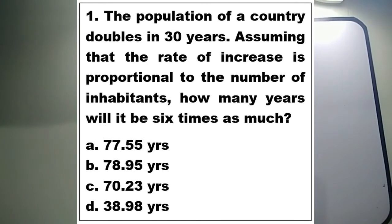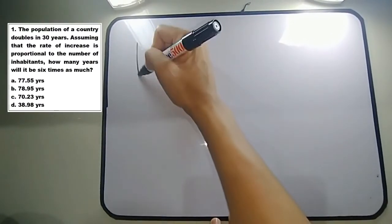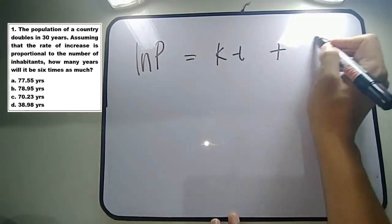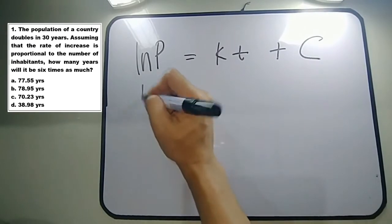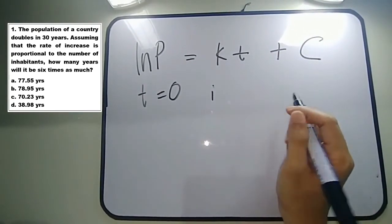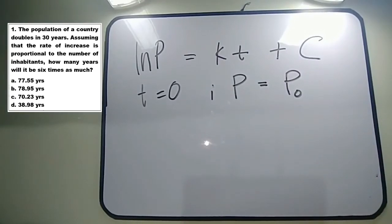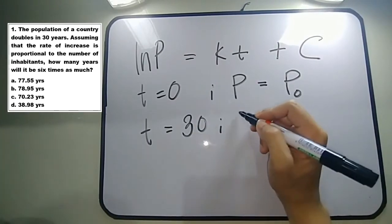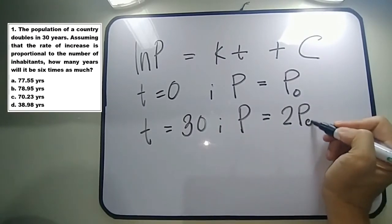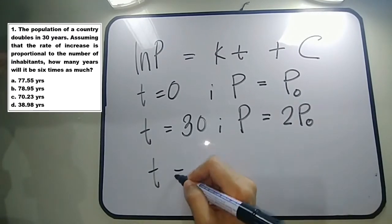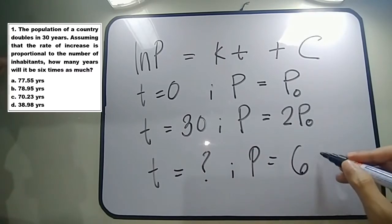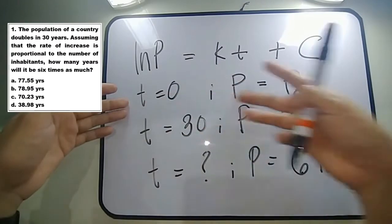In this first problem, the population of a certain country doubles in 30 years. Assuming that the rate of increase is proportional to the number of inhabitants, how many years will it be 6 times as much? Using our general solution ln p equals kt plus c, we set up our conditions. Since no exact population amount is given, at time 0 we say p equals p-sub-0. At time 30 years, the population becomes 2 times the original population.